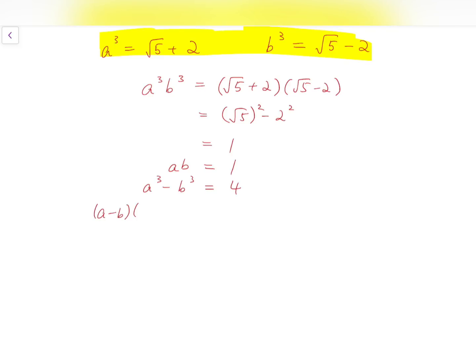To proceed, we can factorize the difference of cubes, which is a minus b times a squared plus ab plus b squared. And for the second part of the product, I can rewrite that in terms of a minus b.